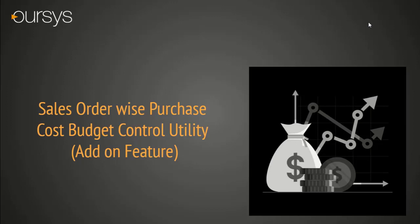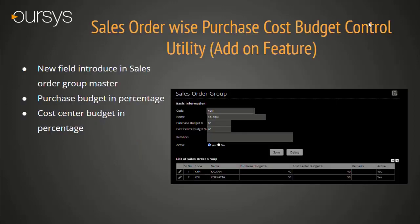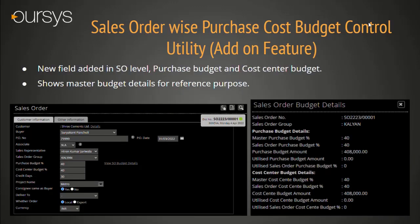Sales Order-wise Purchase Cost Budget Control Utility. This is a new add-on feature introduced in this version for management. Here we can control our purchase cost against each sales order value, helping us to monitor sales profitability. We have introduced a new Sales Order Group Master where purchase budget and cost center budget fields are added. You have to mention the budget in percentage for each group category of sales. This master is linked with the Sales Order and Purchase Order. The system shows the master budget percentage for reference, and based on the sales order value, shows the estimated purchase cost and cost center budgetary value.